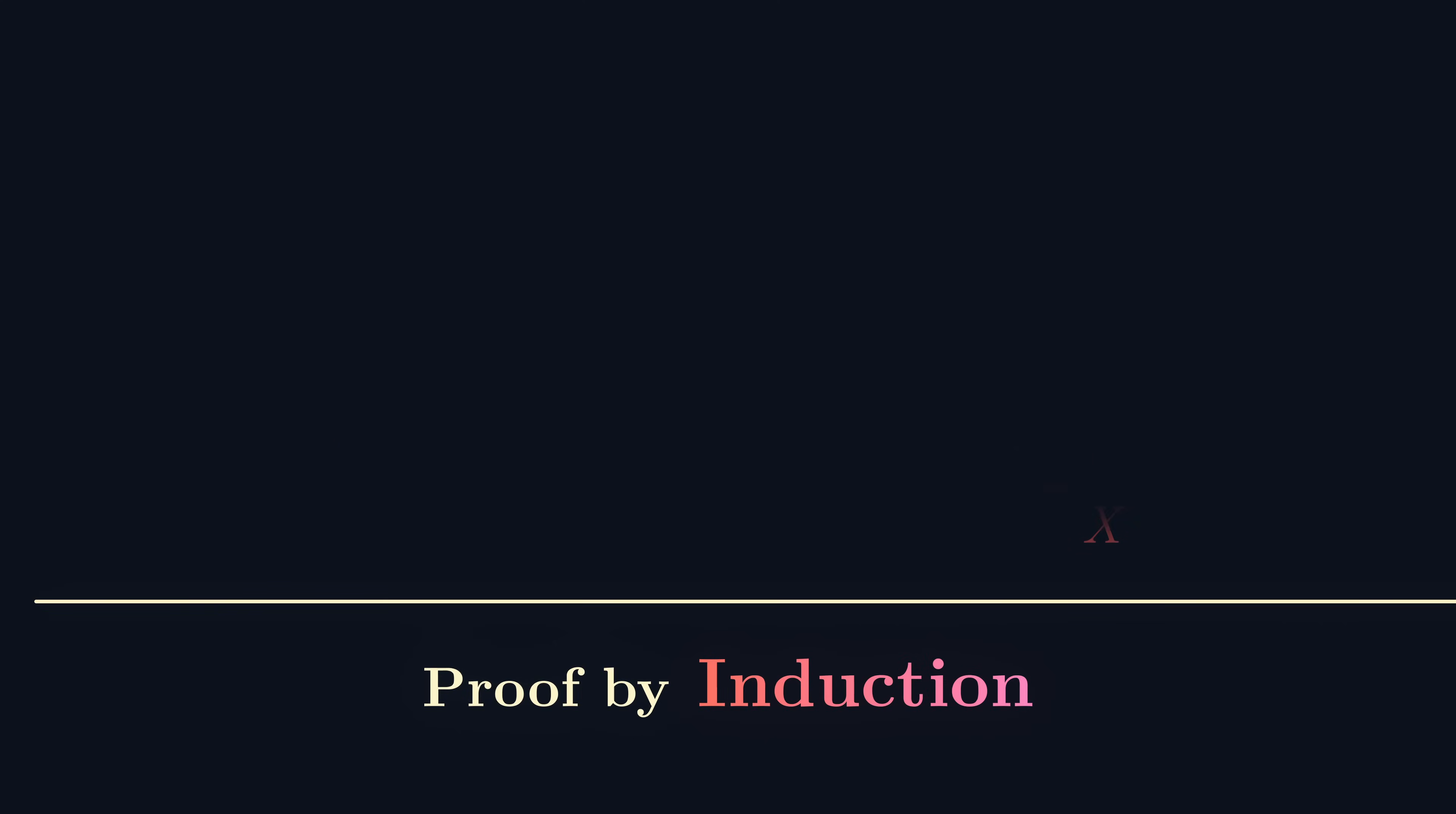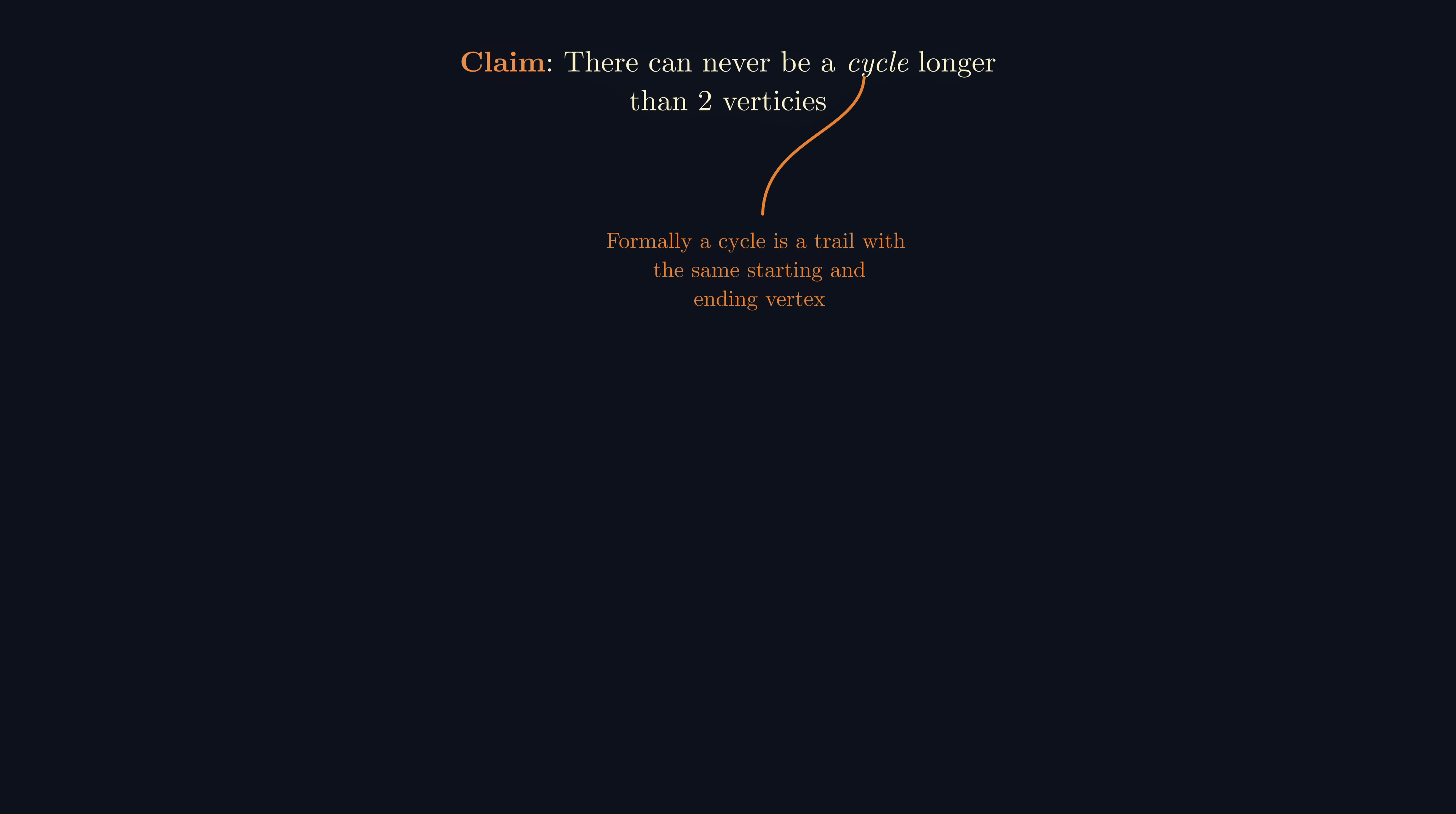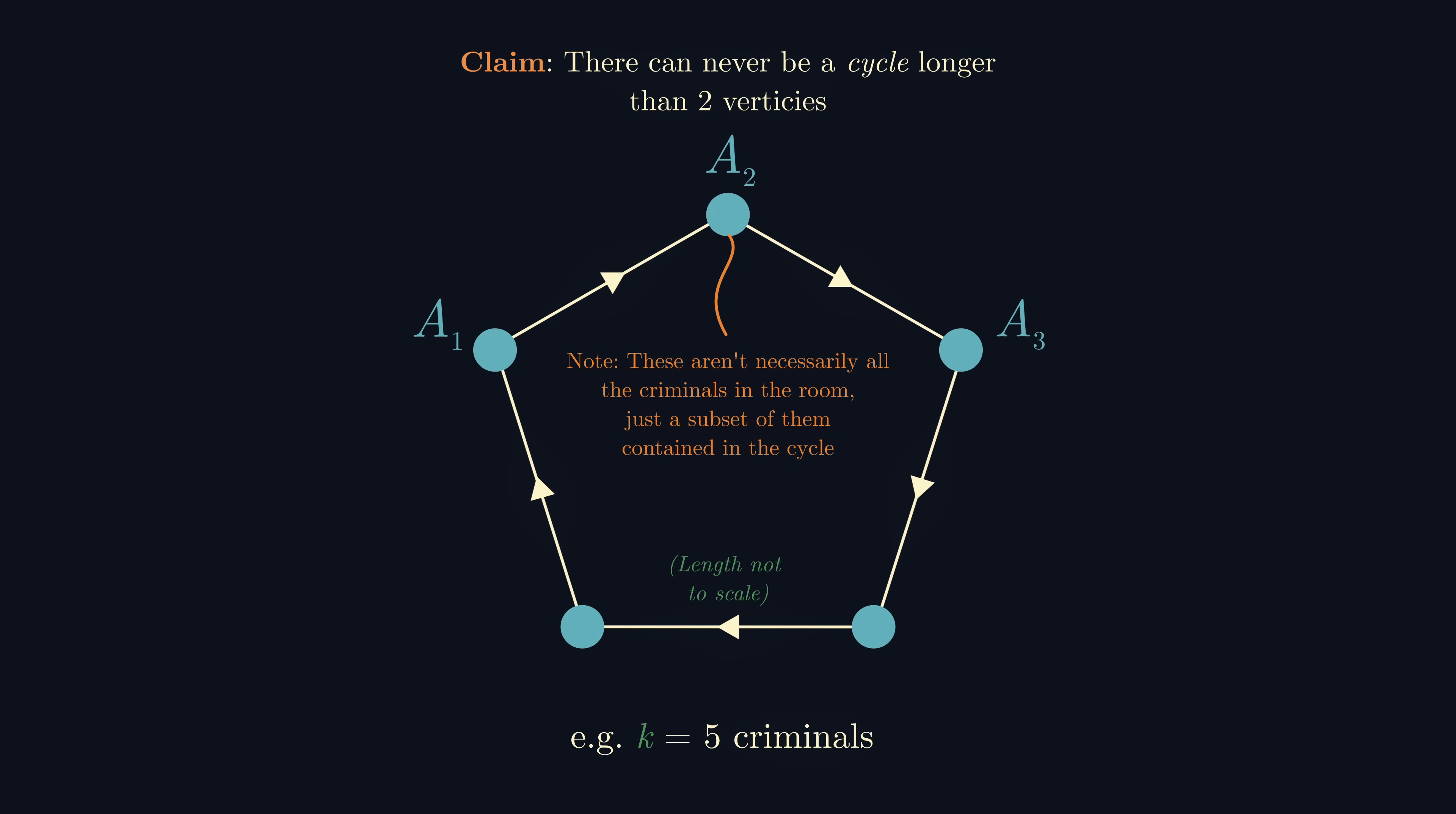I will formalize this induction argument shortly, but the conjecture that we'd made about the length of the longest cycle seems like something we should try and prove. Assume for a contradiction that there exists some cycle of length k greater than 2 criminals, which we can label a1, a2, all the way up to ak, where a1 watches a2, a2 watches a3, and so on until it cycles back to ak watches a1.